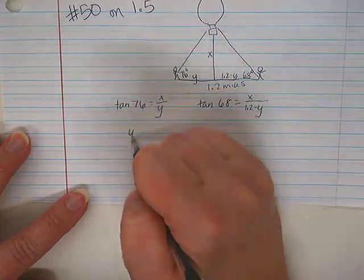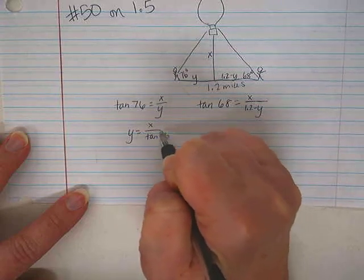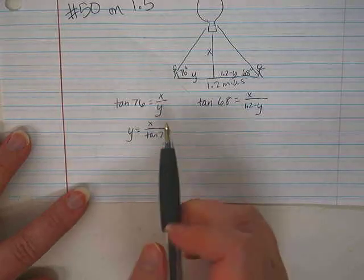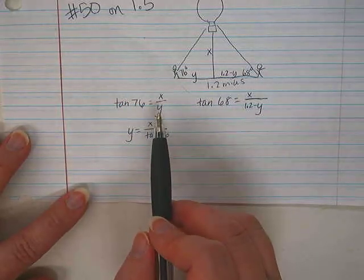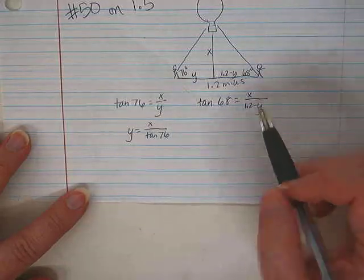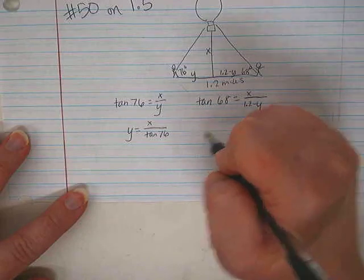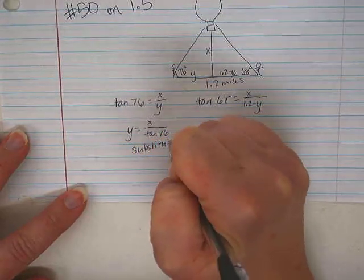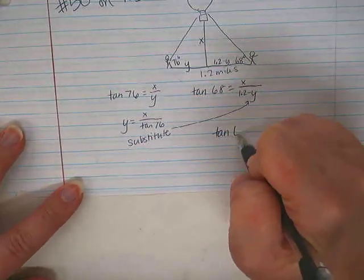So I'm going to cross multiply and then divide. So I end up with Y equals X over tangent 76. Did I lose anyone there? They just kind of trade places, because you cross multiply it and then you divide it, right? So then I'm going to take this Y and replace it with that, so substitute that into there.